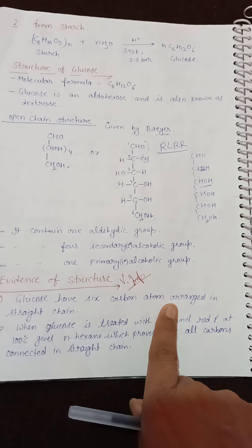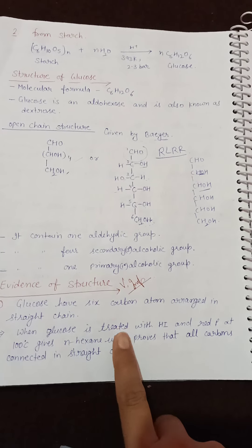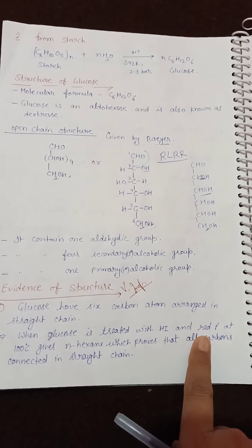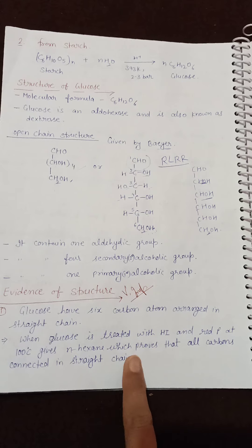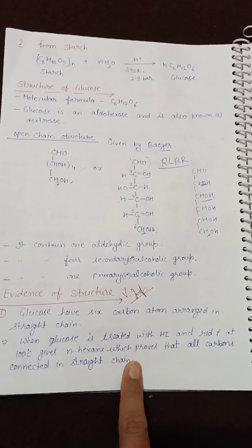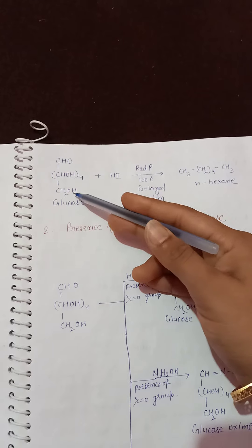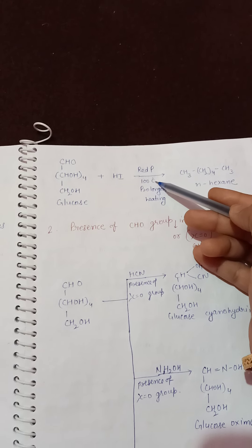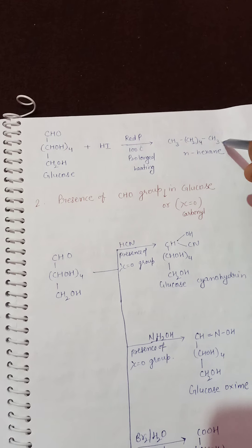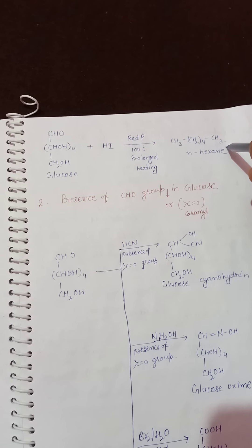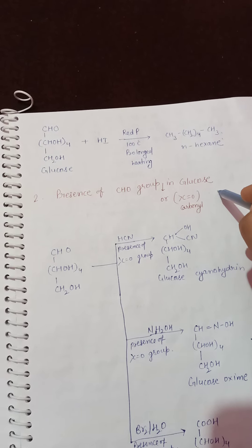Evidence that glucose has six carbon atoms in a straight chain: when glucose is treated with HI and red phosphorus at 100°C (prolonged heating), it gives n-hexane — a six-carbon straight-chain hydrocarbon. This proves all six carbons are connected in a straight chain.